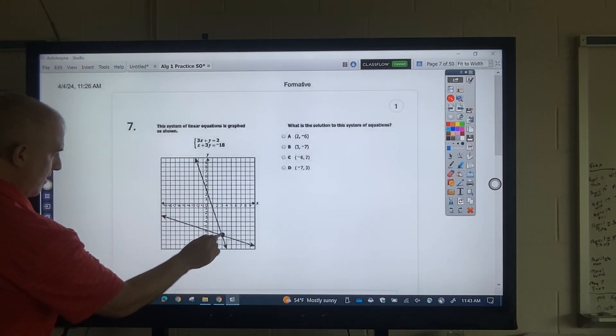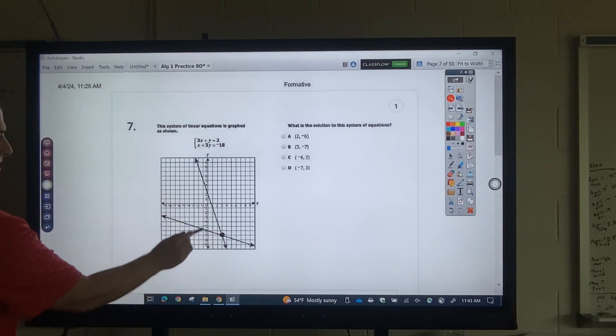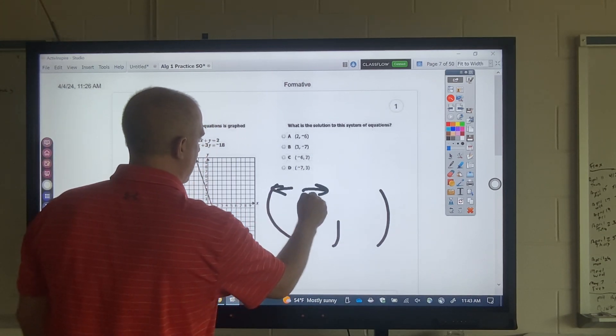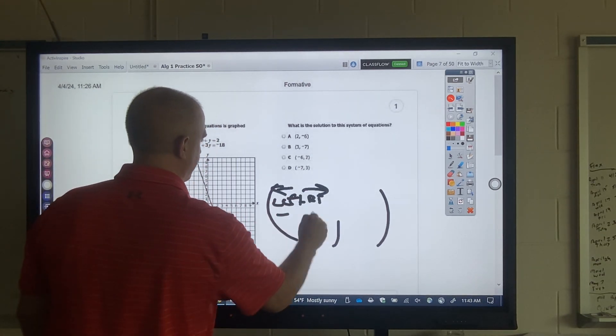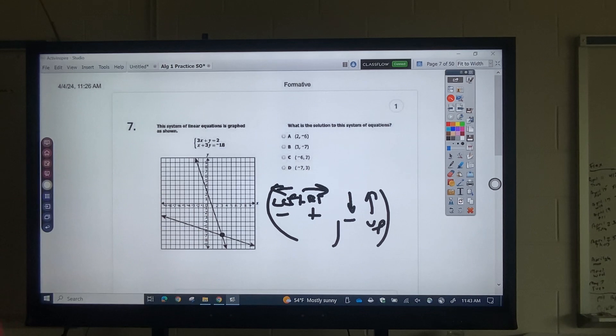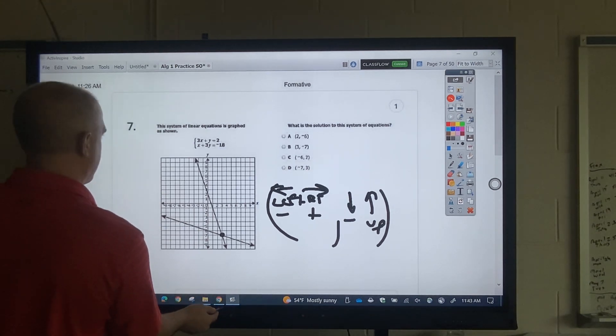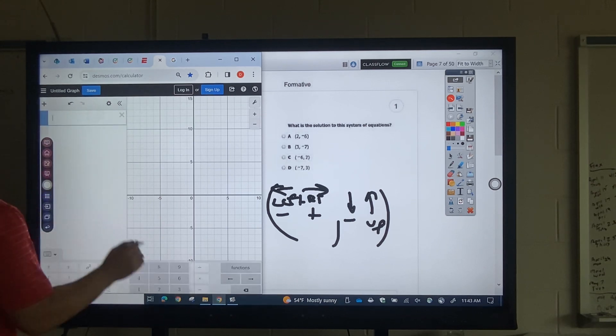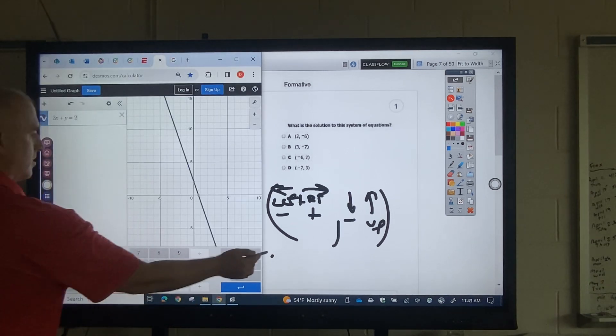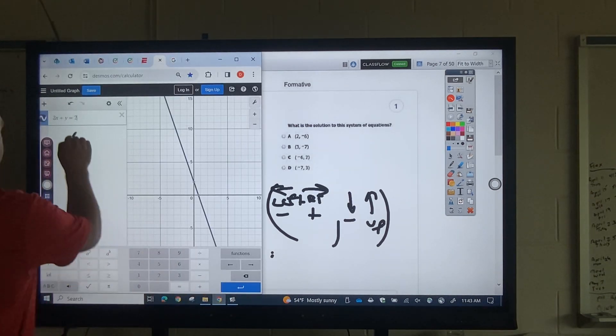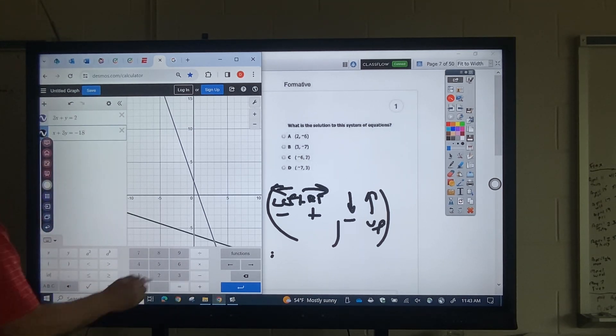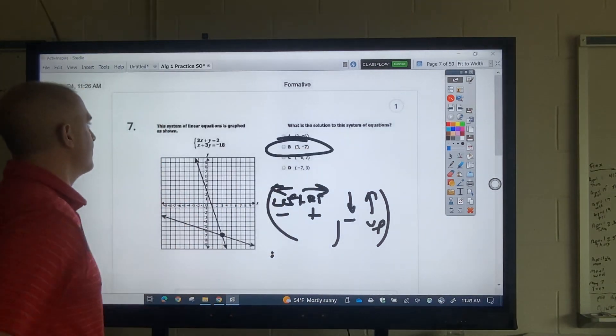All right, what's the solution? You can either look here and know that that's 3 negative 7. So remember when you go, that's right and left, down and up. So from the center, 3 negative 7. Now, if you wanted to graph that, okay, that's 3x plus y equals 2, x plus 3y equals negative 18. And I look where it crosses. 3 negative 7 is the answer. Okay.